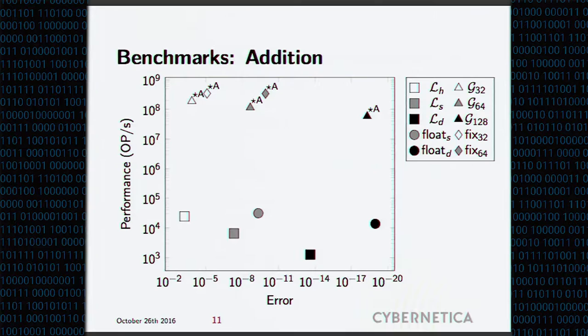For addition, the picture is more or less what you would expect. Your golden section numbers and fixed point numbers perform marvelously in case of addition. And your floating point numbers and logarithmic numbers lag quite behind. So this was what was expected.